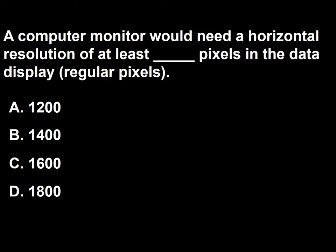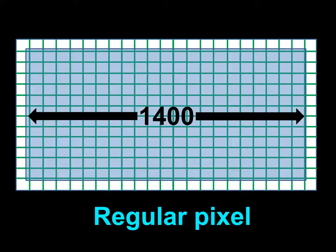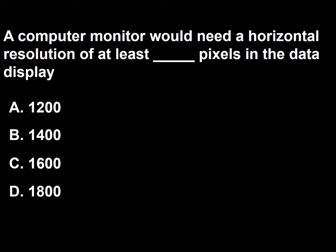Next question: A computer monitor would need a horizontal resolution of at least how many pixels in the data display area? A, 1,200; B, 1,400; C, 1,600; D, 1,800. Regular pixels must be at least 1,400. So the answer to this question is B.